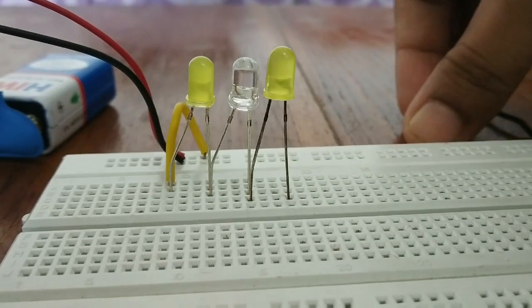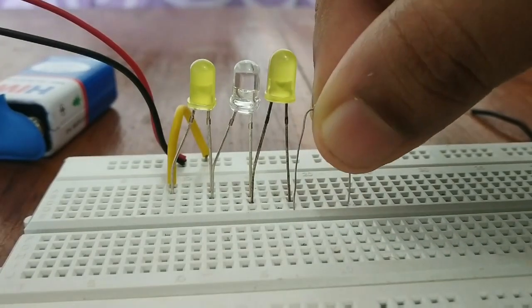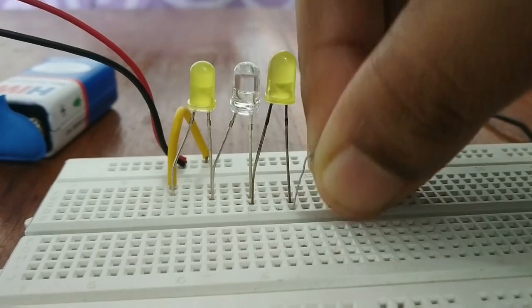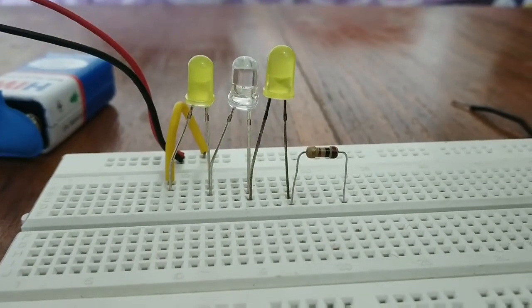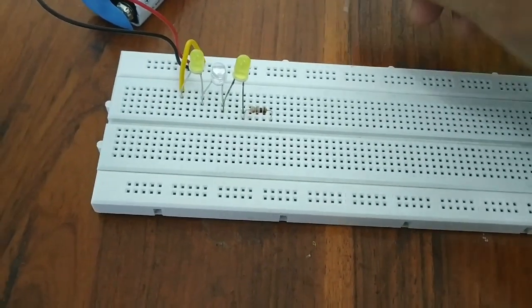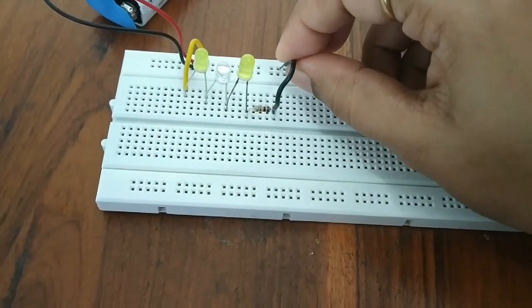Connect one leg of the 1 kOhm resistor to the negative terminal of LED 3. Now our last step is to connect the other terminal of the resistor to ground.